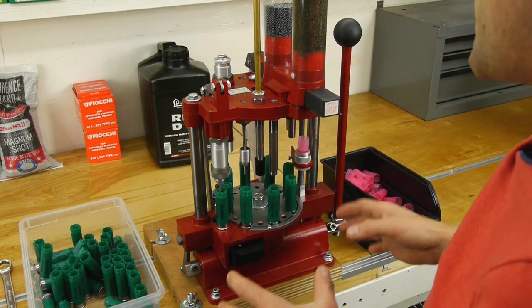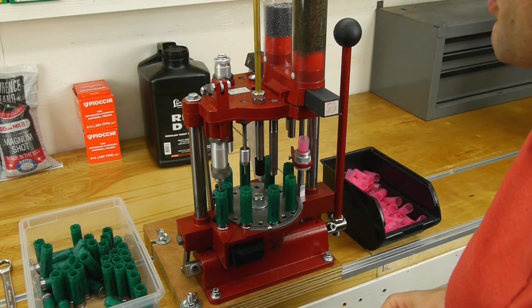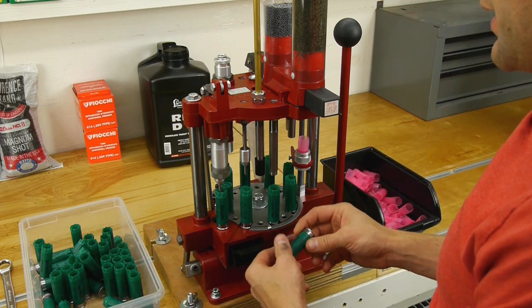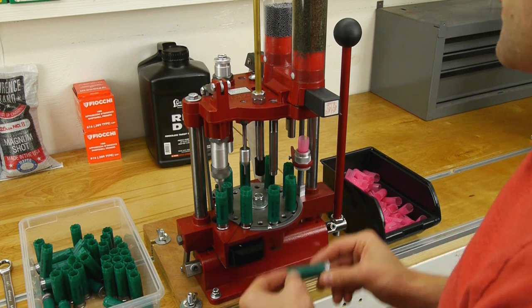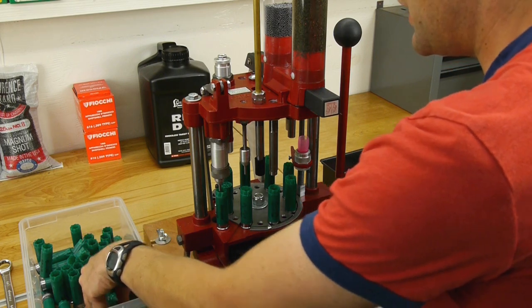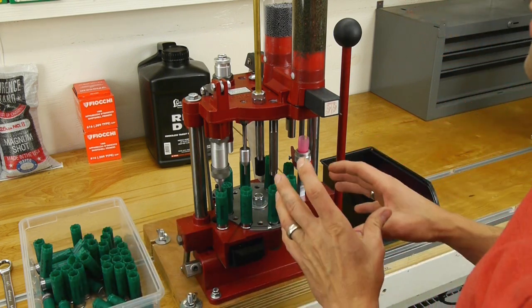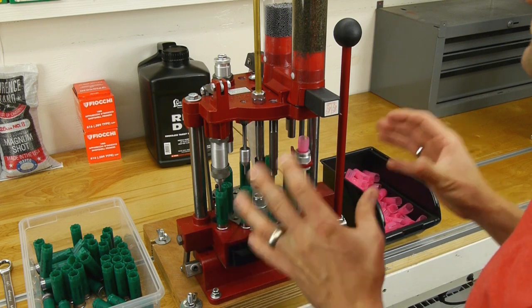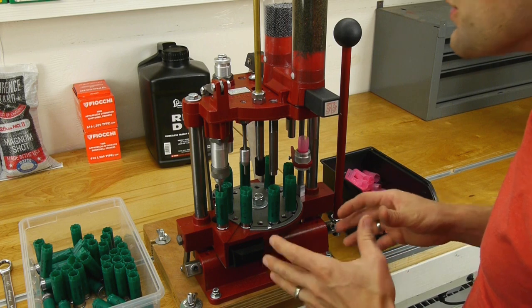Alright so we're all set up for full progressive operation here. I'm reloading some Remington Gun Club 12 gauge previously fired hulls and what I wanted to do before I go into too much detail in terms of what each station is doing is cycle the press a couple times so that you can kind of visualize what happens.